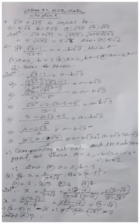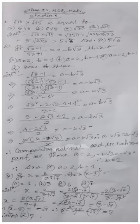Expanding (√3 − 1)² using a² − 2ab + b²: √3² = 3, 2 × √3 × 1 = 2√3, and 1² = 1. So the numerator is 3 − 2√3 + 1. The denominator is √3² − 1² = 3 − 1 = 2.